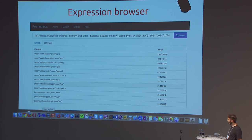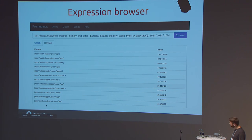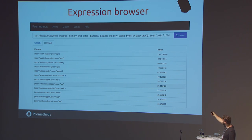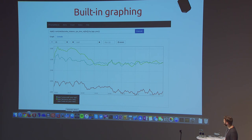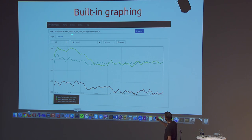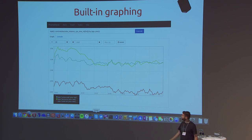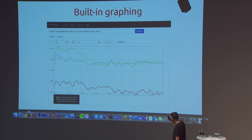Just some visual examples: Prometheus has a built-in expression browser where you can enter any PromQL expression and it will give you the current state of any result time series — giving you a glimpse into what your cluster currently looks like. You can also graph things. In this example, the Bazooka instance CPU time in nanoseconds is a counter — not just one number, but a counter for every instance in the cluster, keyed by dimensions such as app, prog, revision, and others.